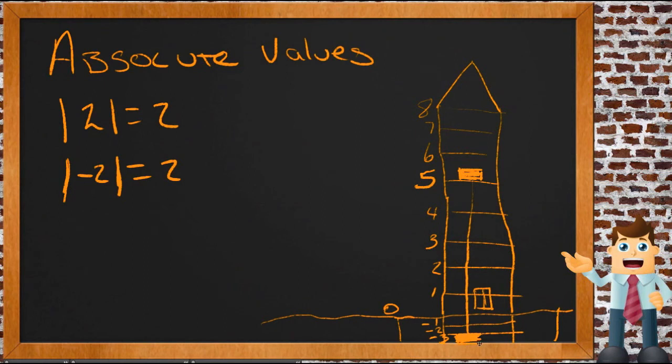We have just a distance of eight floors between the negative third floor and the fifth floor. So in this case, we would express that as the absolute value of five minus negative three.